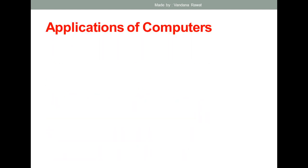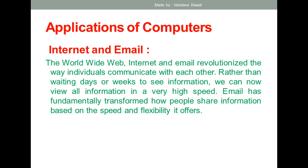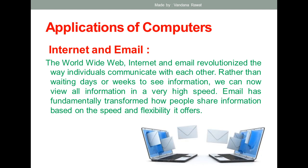The next field is internet and email. Computers are used for accessing the internet and sending emails. The internet — the worldwide web — and email have revolutionized the way individuals communicate. Rather than waiting days or weeks, you can now view all kinds of information at very high speed. Email has fundamentally transformed how people share information based on speed and flexibility.